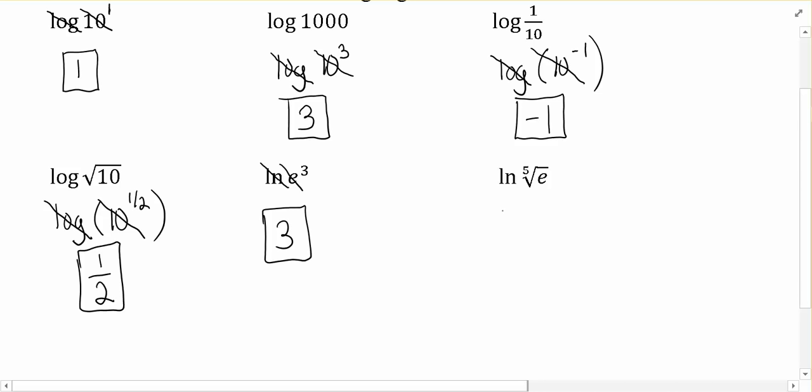And if we had a radical, we would rewrite it as a power. So instead of the 5th root, we'd have the 1 fifth power, at which point the natural log and the e to a power undo one another, leaving us with just the 1 fifth.